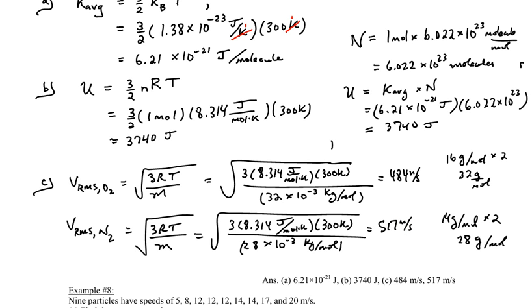Notice these speeds are quite high — around a thousand miles per hour — because the molecules are very light. Also notice that nitrogen moves faster than oxygen because RMS velocity is inversely proportional to molar mass. RMS velocity is also directly proportional to temperature in Kelvin. Be careful not to mix the two formulas: if using molar mass M, use the gas constant R; if using mass per molecule m, use the Boltzmann constant k_B.